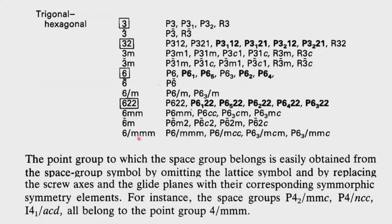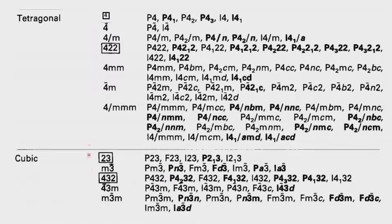For 6/m 2/m 2/m we get several possible space groups. For instance, the space group P42/MMC in the tetragonal system corresponds to 4/m 2/m 2/m, which corresponds to 4/MMC. It is very easy to find the corresponding point group symmetry given the space group.